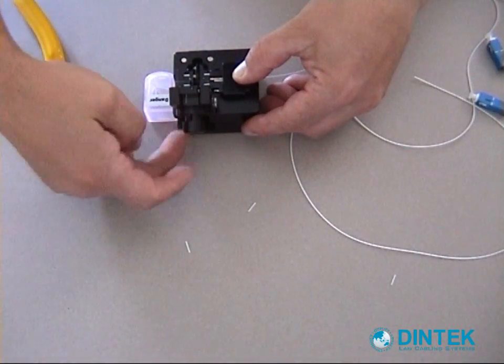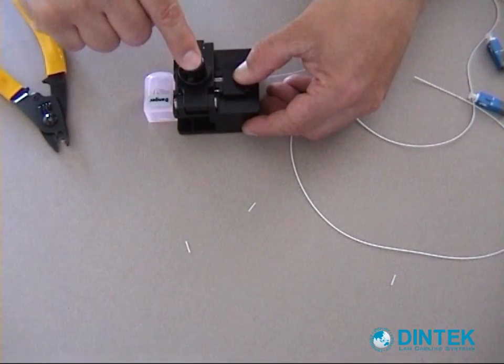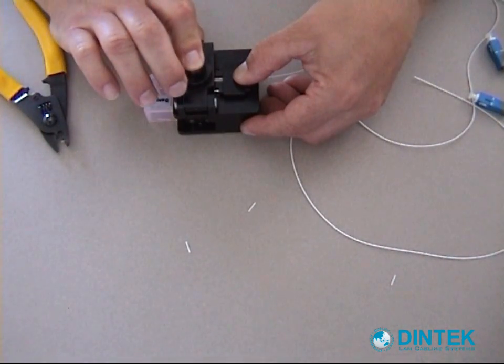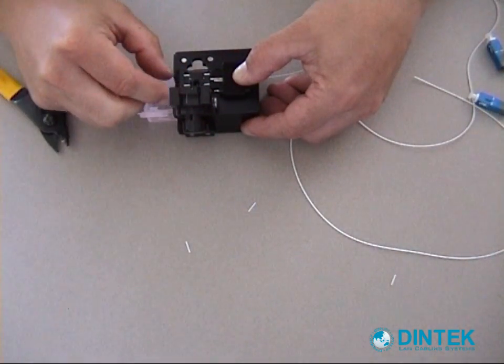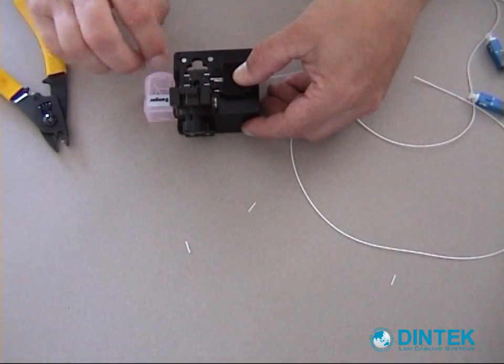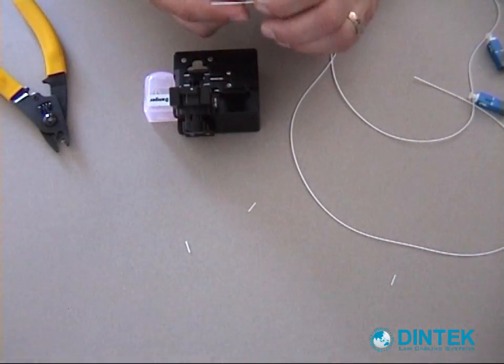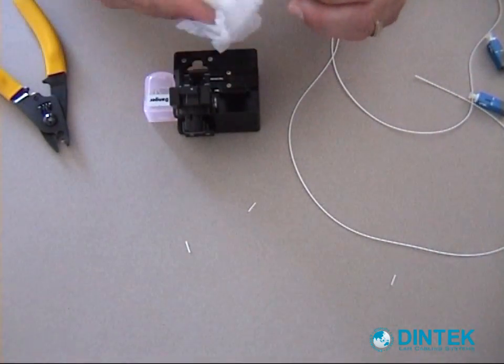Push our cleaving arm back to the front. Close the lid. Hold the fiber in place and run through with the cleave. Put our fiber in its little rubbish bin there. Always need to have eye protection and something to put your fiber pieces in.